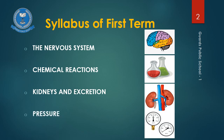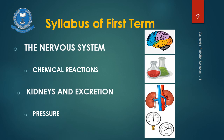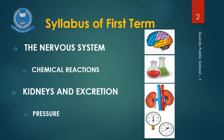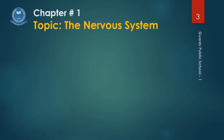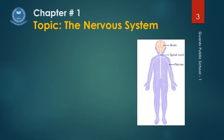In these four chapters, two chapters are from Biology — the Nervous System and Kidneys and Excretion. One from Chemistry — Chemical Reactions, and one from Physics — Pressure. We will start our first term with the chapter from the Biology portion, i.e., the Nervous System.